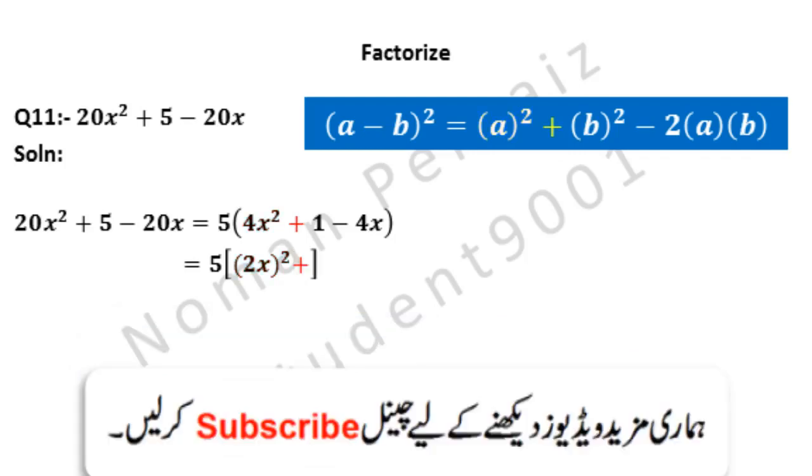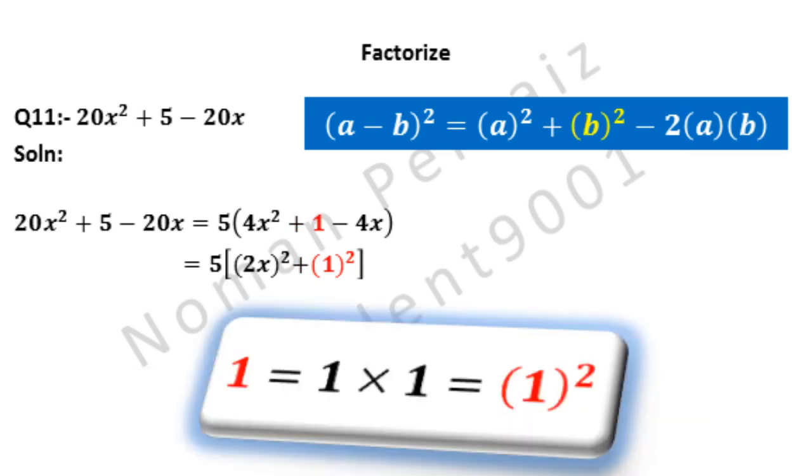Plus is written as it is. 1 can be written as 1². 1 equals 1 × 1, and it becomes 1². And now look at formula above, 1² is our b² also.